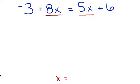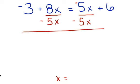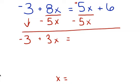We have a positive 5x here — remember there's a positive sign there even if you don't see it. In order to get rid of that, we have to do the inverse, which is negative 5x. If you subtract 5x from this side, you have to subtract 5x from that side. So we're going to bring down our negative 3. 8x minus 5x gives us 3x, equal sign, and 5x minus 5x gives us 0. Then bring down our 6.